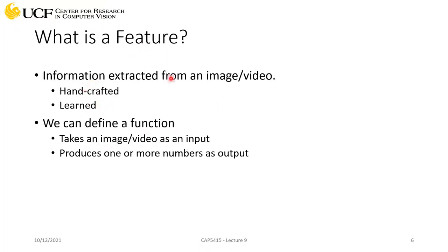For feature extraction, we define a function that takes your input sample — an image or a video — and generates some numbers. It could be just one number or a set of numbers, and we call those features. It forms a feature vector; if there are N numbers it will be an N-dimensional feature vector. That's a very general concept.